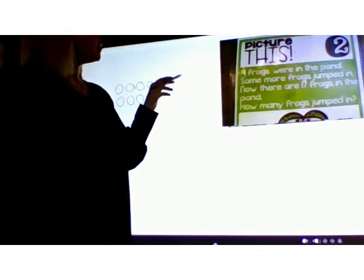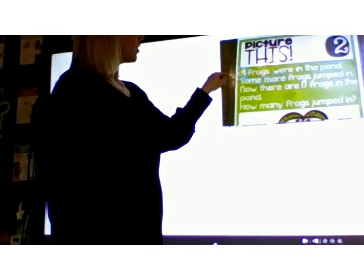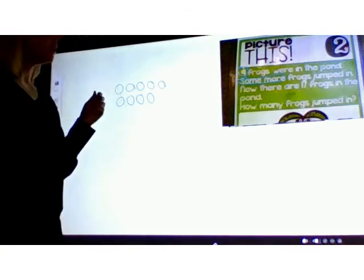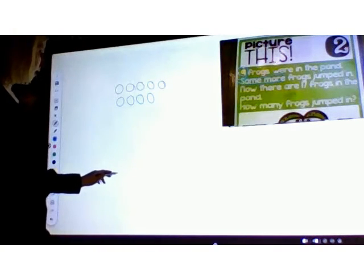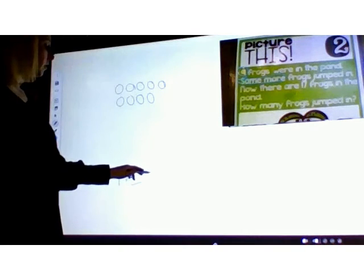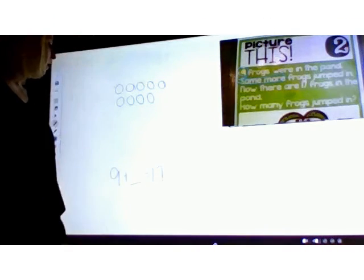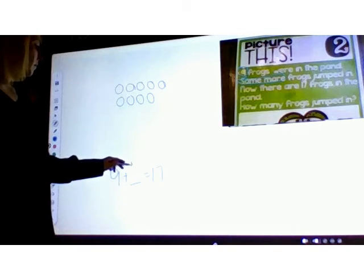In the middle of the story, we know some more frogs joined, so we know we're adding more frogs, we just don't know how many. So nine plus an amount is going to give us the 17 frogs we have at the end of our story. So this is the number, the missing addend, that we have to figure out, and we can do this by counting up.